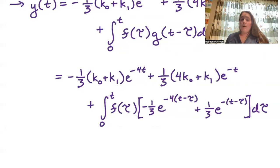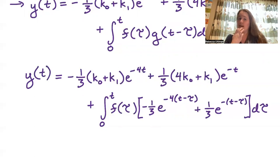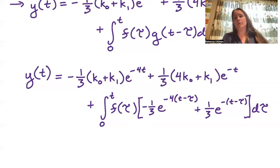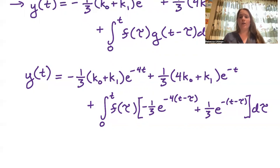Whatever f(t) is and whatever initial conditions k₀ and k₁ are, we now have a formula already solved for y(t). You can jump straight to this formula instead of solving the IVP over and over again. The Laplace transform and convolutions allow us to derive such a formula, which we can then evaluate function by function or leave in this form and plug in our desired function and initial conditions.